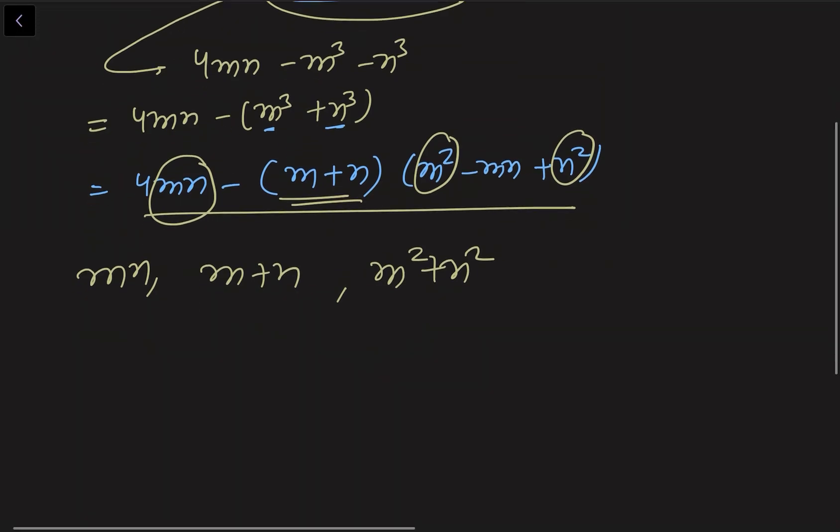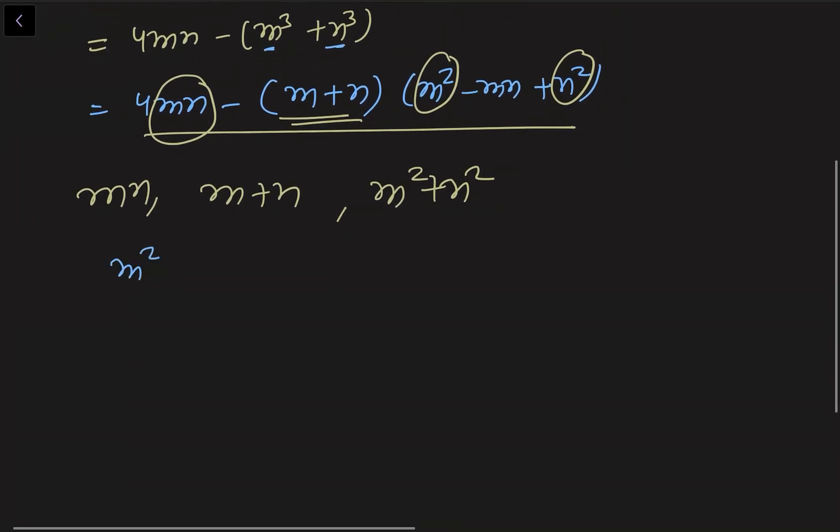And what are the equations given to us? Equations given to us are: m² = n + 2, n² = m + 2. Well and fine.